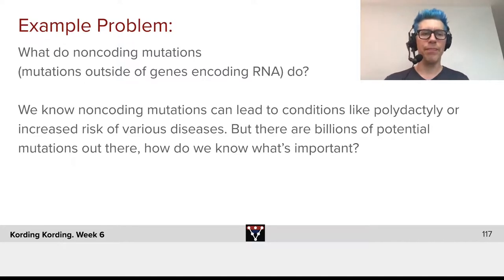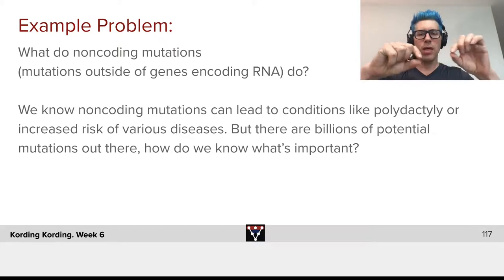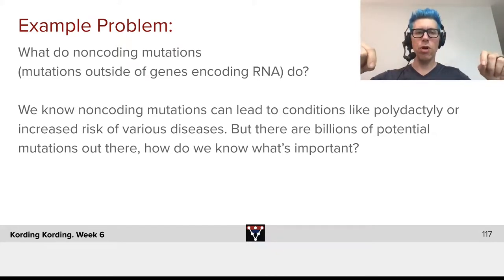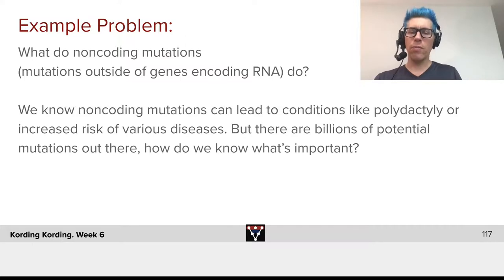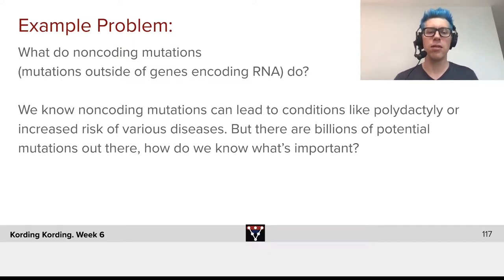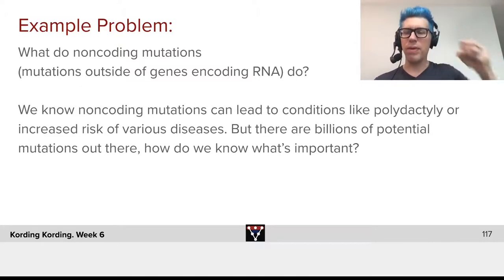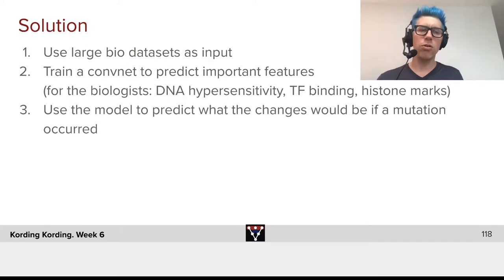Here's an example involving proteins. What do non-coding mutations — mutations outside of the genes encoding RNA — do? RNA is a long string that is ultimately used to make proteins, but we also have parts of our genome that are not made into RNA. So what's their role? We know that non-coding mutations can lead to conditions like polydactyly or increased risk of various diseases. There are billions of potential mutations out there. How do we know which ones are important? According to the ideas of convNets, we can believe there is something local about them that tells us about their potential to produce diseases.